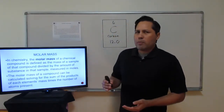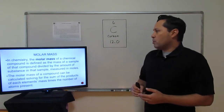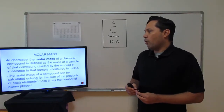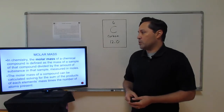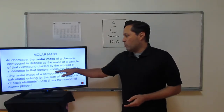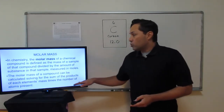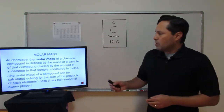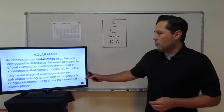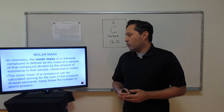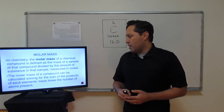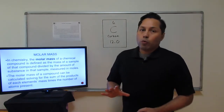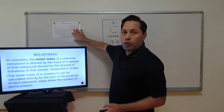So what is molar mass? In chemistry, the molar mass of a chemical compound is defined as the mass of the sample of that compound divided by the amount of substance of that sample measured in moles. So grams divided by moles is going to be the unit we'll be using. Molar mass can be calculated as the sum of the products of each element's mass times the number of atoms.